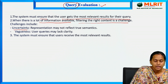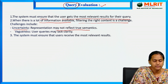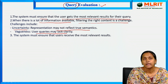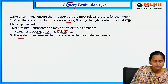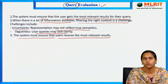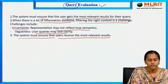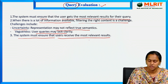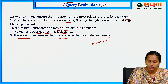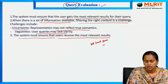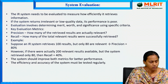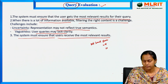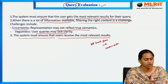The challenges include uncertainty — representation may not reflect the true semantics — and vagueness, where user queries may lack clarity. To resolve this query evaluation issue, the system must ensure that users receive the most relevant results. For example, when a user searches for 'best smartphone' on Google, Google must show relevant documents, not random data.